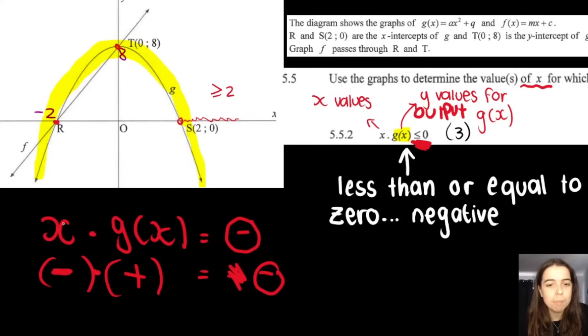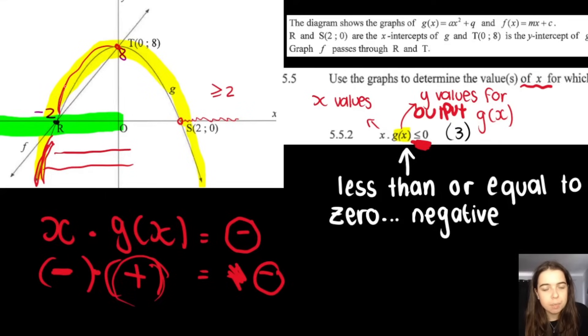So x's are negative. Where are my x's negative? x's are negative here. However, my output values for g of x must be positive. And where are my output values for g positive? Definitely not down here. We can see that all of these are negative y values for g. But here, my g of x values are positive. So for this section of the graph, that is where the product of those two things will be less than zero. So between x being negative two and x being zero, between those two values. So x must be greater than or equal to negative two, but less than or equal to zero. That is the first part of our answer.